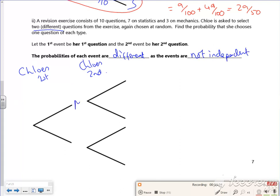Right, so what have we got? I've got mechanics and stats. So first time she does 3 out of 10, 7 out of 10. Now if she chose mechanics on the first one, she can't choose that same one. So I'm down to 2 questions out of 9, and the stats is still 7 questions out of 9.